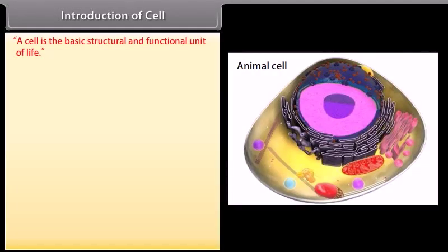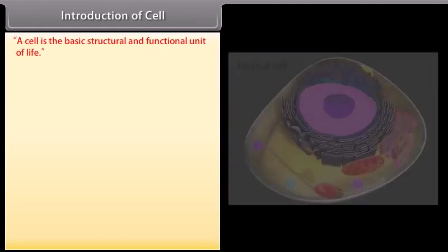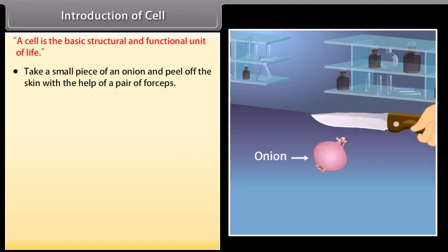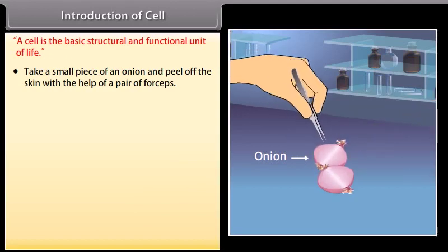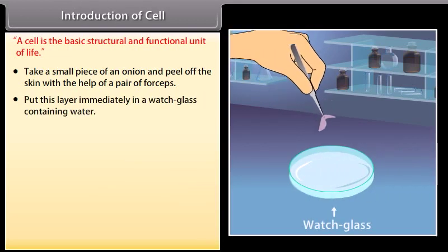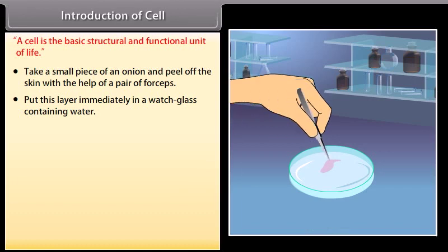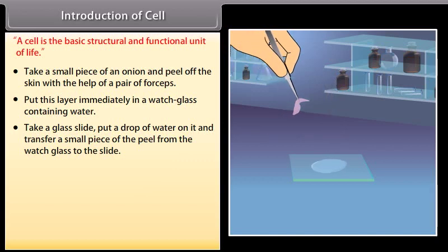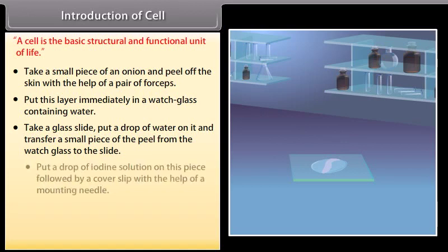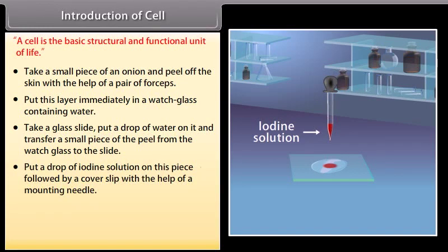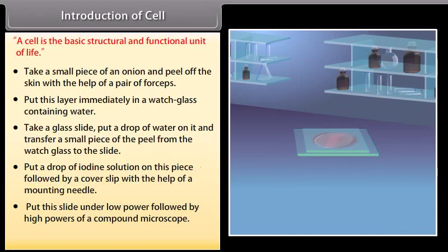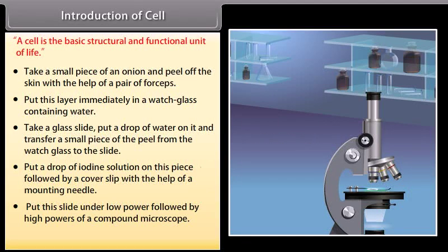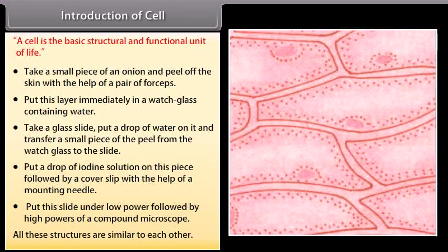A cell is the basic structural and functional unit of life. In an experiment, take a small piece of an onion and peel off the skin with a pair of forceps. Put this layer in a watch glass containing water, then transfer a small piece of the peel to a glass slide with a drop of water. Add a drop of iodine solution and a cover slip, then place the slide under low power followed by high power of a compound microscope. All these structures observed are similar to each other.